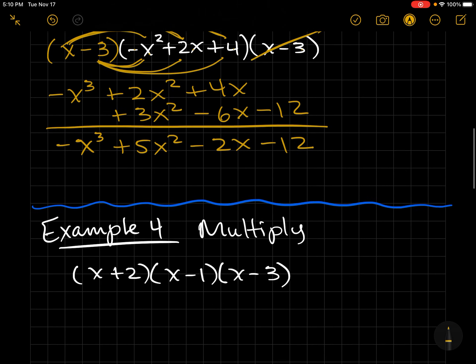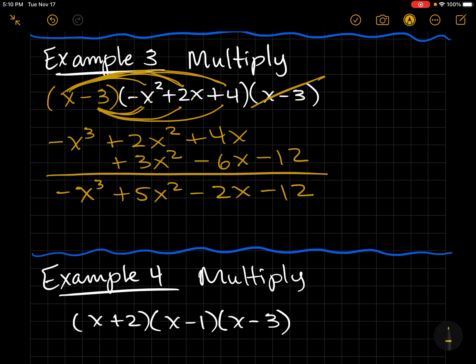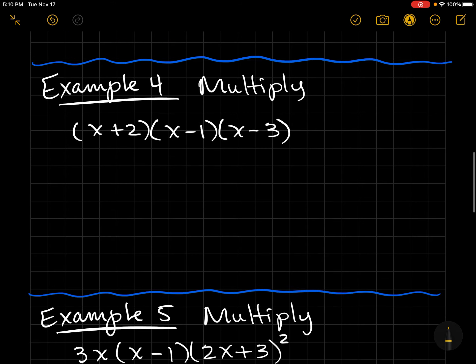You never want to turn around and factor or anything. The direction says multiply, so that's what we do. Even if you see everything's divisible by a certain number, don't do it. Only follow the directions.